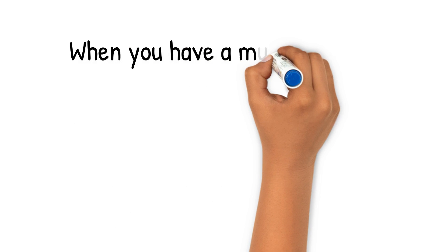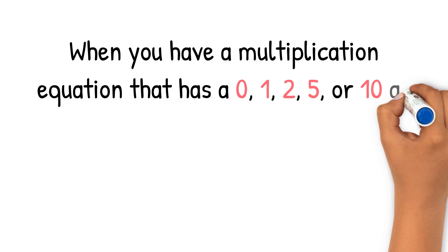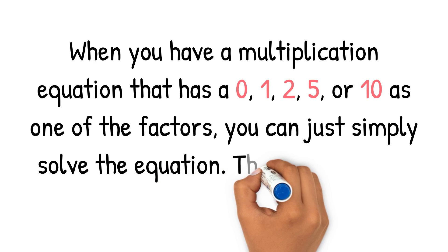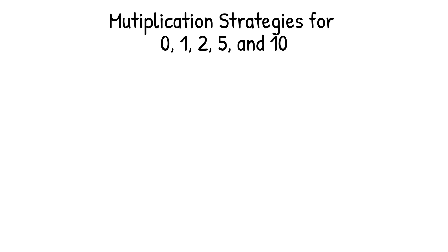When you have a multiplication equation that has a 0, 1, 2, 5, or 10 as one of the factors, you can just simply solve the equation. These factors are pretty easy to multiply. Here are some multiplication strategies for multiplying with 0, 1, 2, 5, and 10.